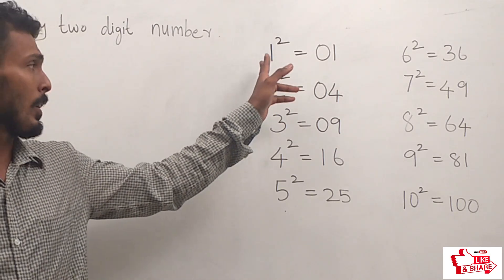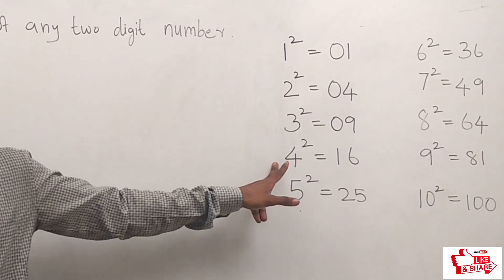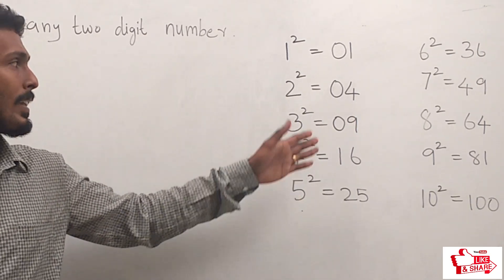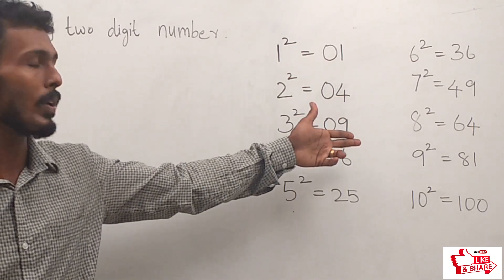1² is 1, 2² is 4, 3² is 9, 4² is 16, 5² is 25, 6² is 36, 7² is 49, 8² is 64, 9² is 81.